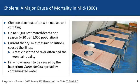At this time, cholera was a major cause of mortality. Cholera is a disease that results in diarrhea often associated with nausea and vomiting. They saw up to 50,000 estimated deaths per season, which is a rate of approximately 20 per 1,000 population. The theory at that time was that cholera was caused by miasms, or air pollution, that existed in the city. They noted anecdotally that areas closer to the river often had worse air quality and also had increased incidence of cholera. Of note, we now know that cholera is caused by the bacterium Vibrio cholerae and is spread by contaminated water.